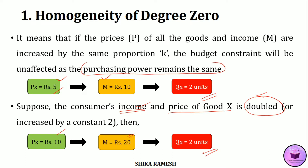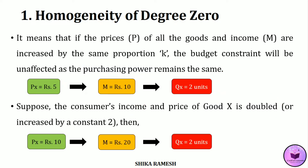The consumer is able to purchase the same amount of product at the new prices and income. In short, we can say that there is no money illusion.